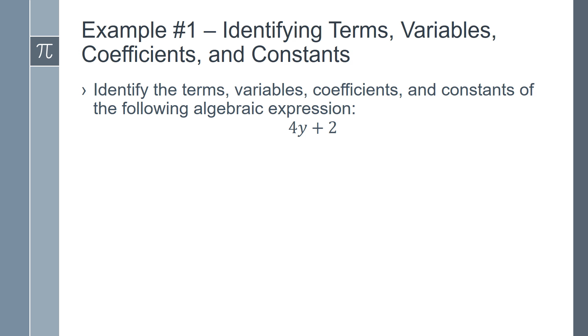Example number 1. You will need to identify the terms, variables, coefficients, and constants of the following algebraic expression: 4y plus 2. We'll start with the terms. Remember that terms are the different pieces of the expression. So in this case the terms are 4y and 2.